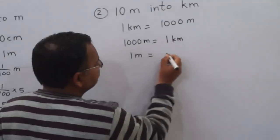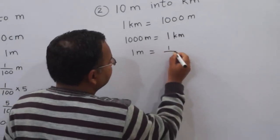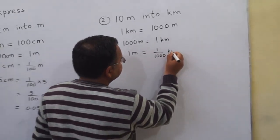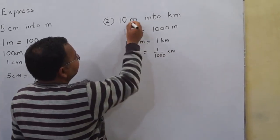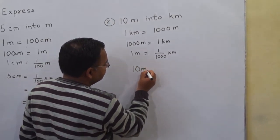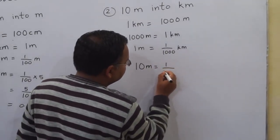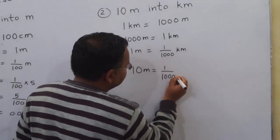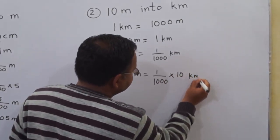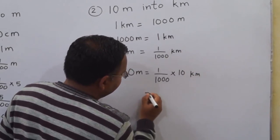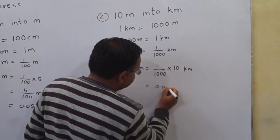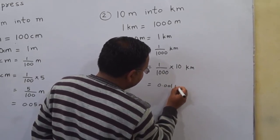One thousand meters is equal to one kilometer, so one meter is equal to one upon one thousand kilometer. Ten meters is equal to one upon one thousand into ten kilometer, and the answer is 0.01 kilometer.